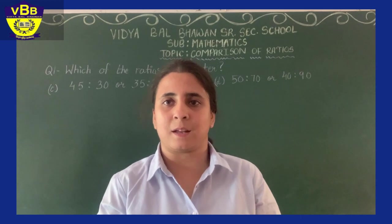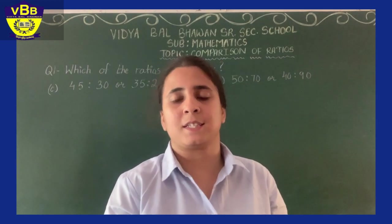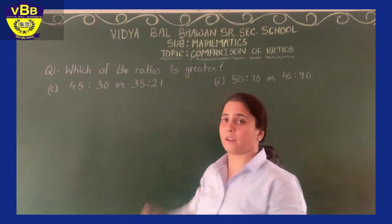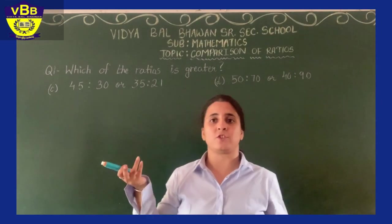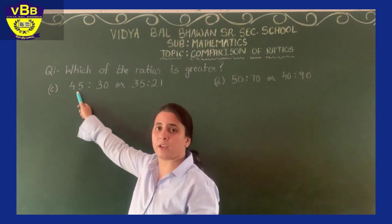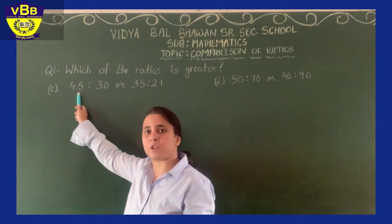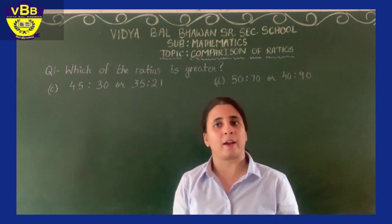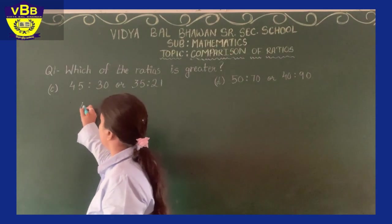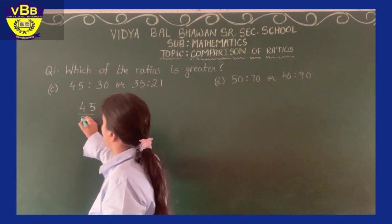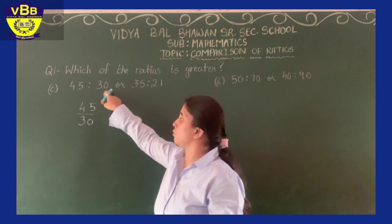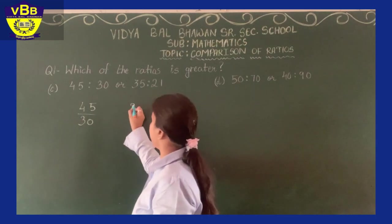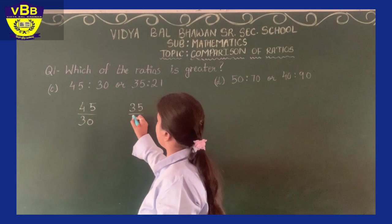Let us learn this concept through an example from exercise number 3. I am doing parts C and D. The question says: which of the ratios is greater? In part C, the first ratio is 45 is to 30 and the second ratio is 35 is to 21. The first step is to write these ratios in fractional form: 45 upon 30 and 35 upon 21.